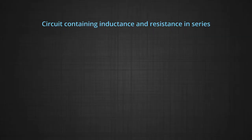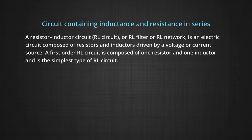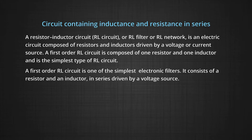Now we will start with a circuit containing inductance and resistance in series. A resistor-inductor circuit, that is an RL circuit or RL filter or RL network, is an electric circuit composed of resistors and inductors driven by a voltage or current source. A first-order RL circuit is composed of one resistor and one inductor and is the simplest type of RL circuit, and also one of the simplest electronic filters. It consists of a resistor and an inductor in series driven by a voltage source.